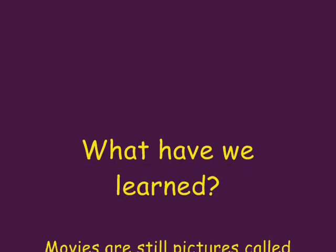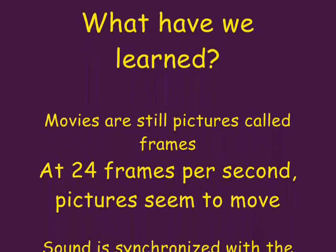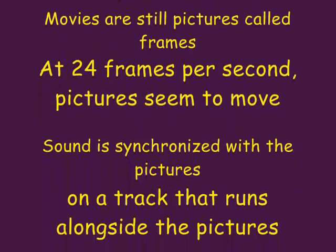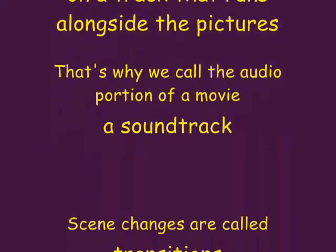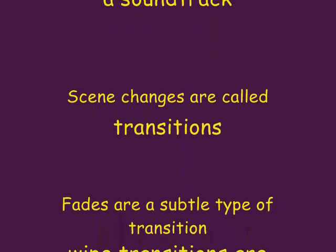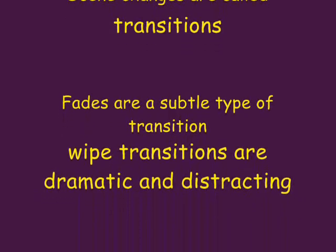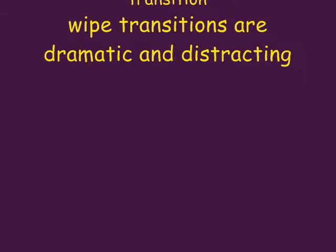So what have we learned? Movies aren't really technically movies at all — they're just a whole bunch of still pictures whizzing past at 24 frames a second, which simulates full motion. They have sound synchronized with them because the sound is whizzing by along parallel tracks to the left of each frame — that's why we call it a soundtrack. Scenes change with effects called transitions: fades are subtle, and wipes are more dramatic and distracting. And that's it in a nutshell.